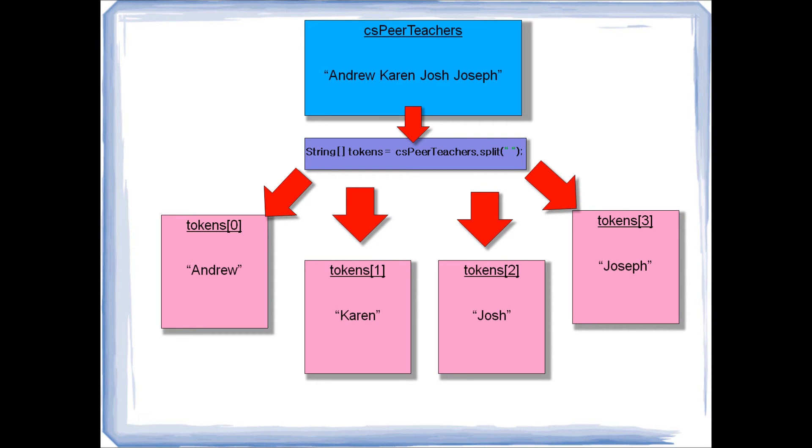So next up, I'm going to show you a visual example. At the top, we have our string object, CSPeerTeachers. In CSPeerTeachers, we have Andrew, Karen, Josh, Joseph. We want to split Andrew, Karen, Josh, Joseph up into four separate strings. To do that, we're going to use the split method. So we're going to say string tokens, that's a string array, equals CSPeerTeachers.split. And we're using a space as our delimiter. So this is going to split our names up into four separate strings in the string array, tokens.